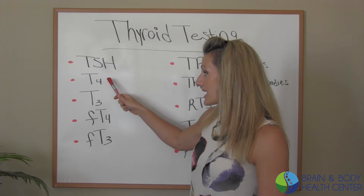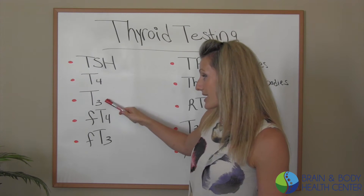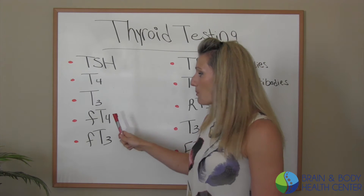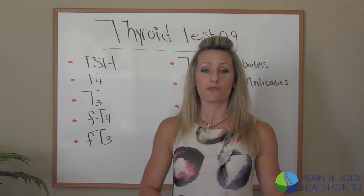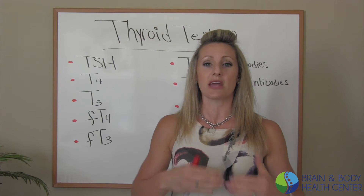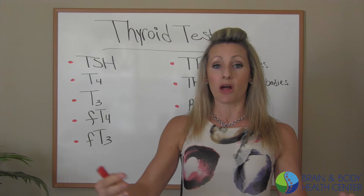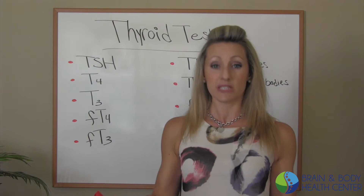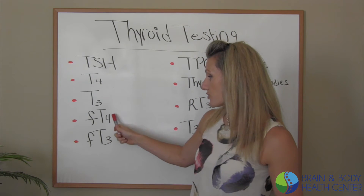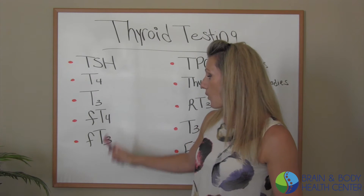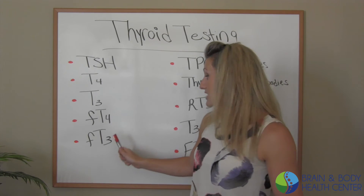We also need to look at T4 and T3, but we want to be looking at the actual free form — how much is actually floating around in the blood that is not bound to anything. So that's going to be free T4 and free T3.